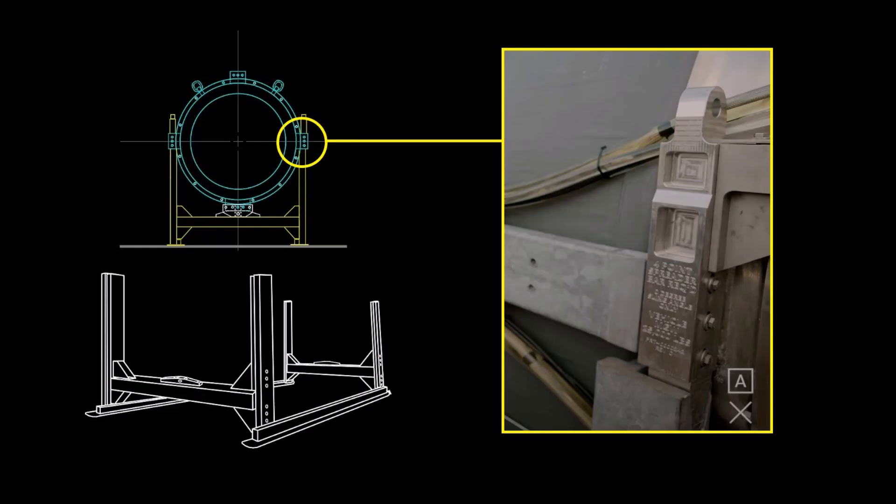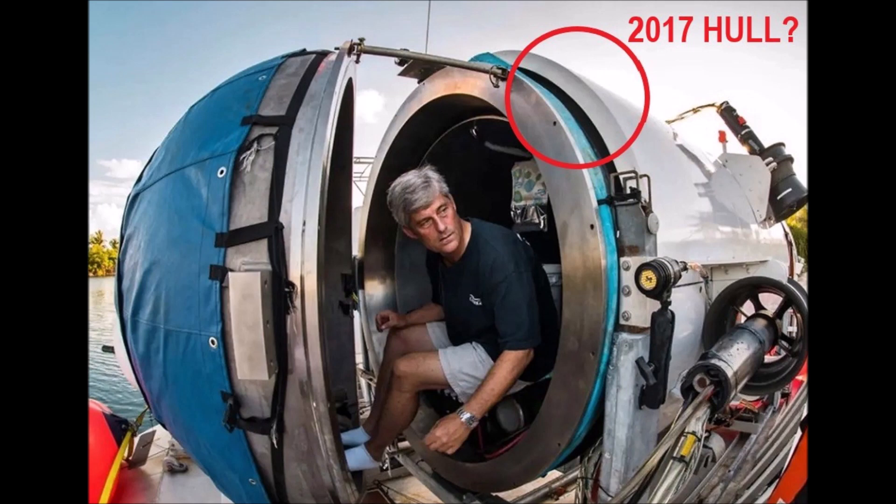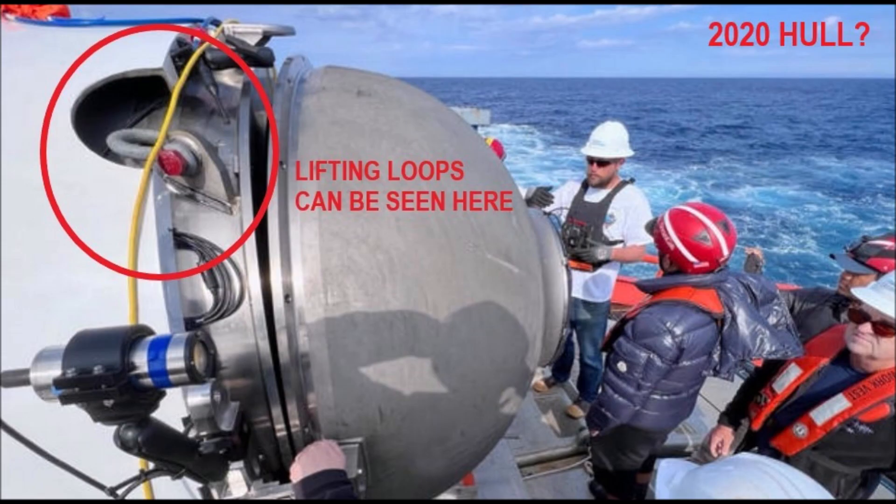It would appear that maybe they had to rebuild the sub to switch out the carbon fiber cylinder, and at that time they changed the design of this frame connector thingy so that they could put lifting points on it as well. You can also see in this picture with Stockton peeking out the front that there are no lifting hooks on the top of the interface ring on this version.